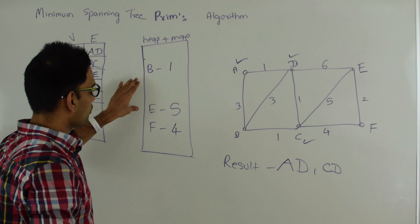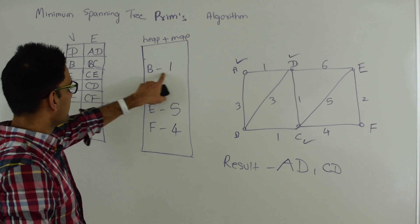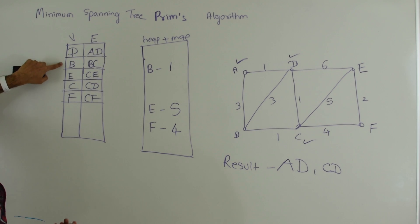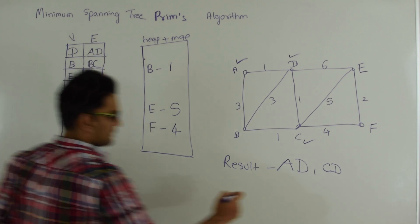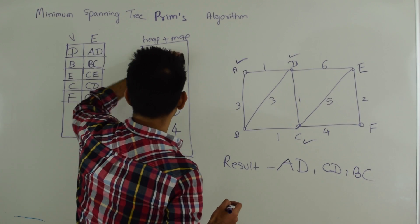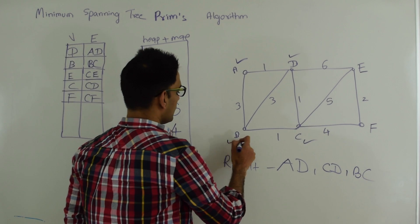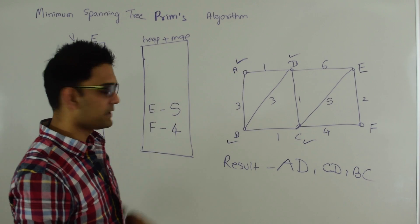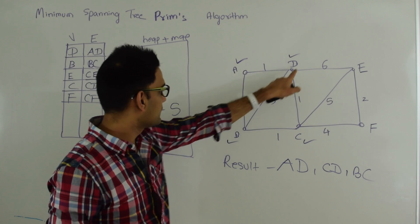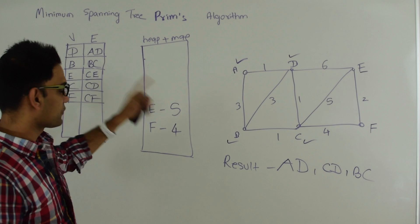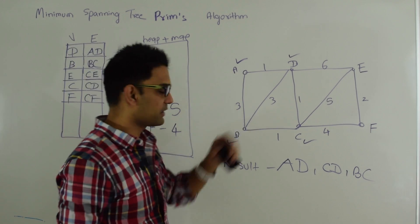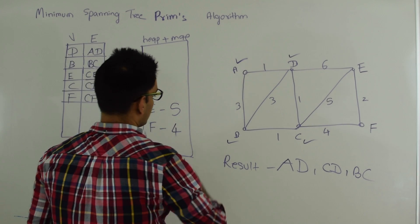C is done. We do an extract-min — B comes out with value 1. We check which edge introduced B: that's B-C, which goes into the final result. We remove B from the heap-plus-map and explore B's neighbors. Neighbor A: not in the heap-plus-map, so we ignore it. Neighbor D: also not there, so we ignore it. Neighbor C: also not there, so we ignore it as well. We move to the next step.